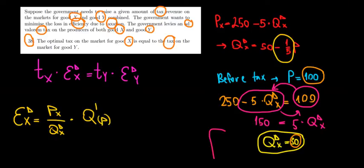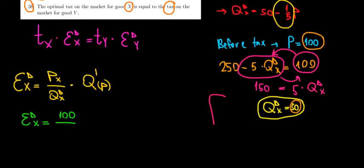So the price of good X in equilibrium is equal to 100 euros. The quantity demanded is equal to 30 units. We have it from here. The quantity demanded is 30 units multiplied with the slope which is minus 1 over 5.